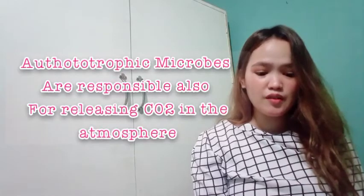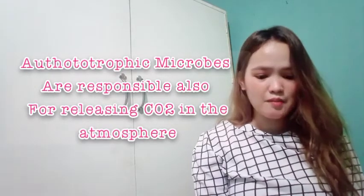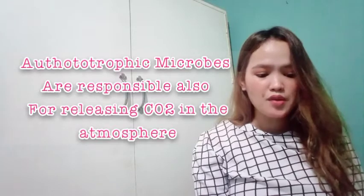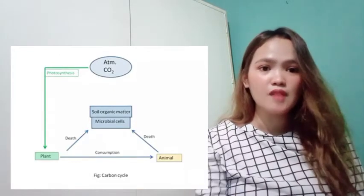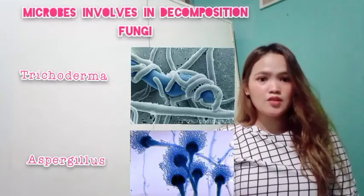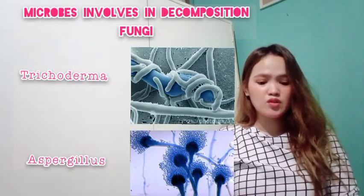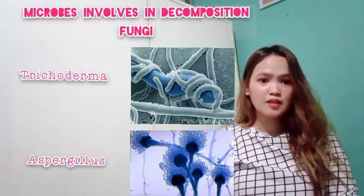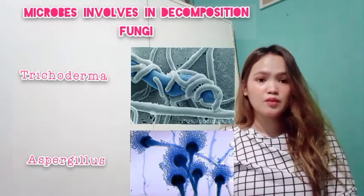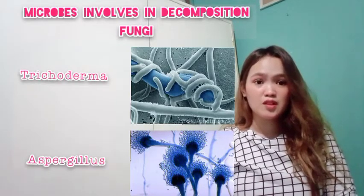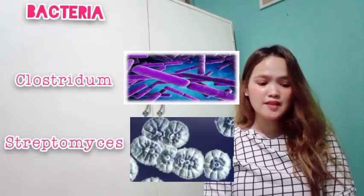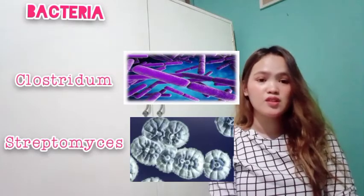Respiration occurs in plants, animals, and microbes. Autotrophic microbes are also responsible for releasing carbon dioxide into the atmosphere — that is the nutshell of the carbon cycle. Microbes involved in decomposition include fungi and bacteria. Examples of fungi include Trichoderma, Aspergillus, Penicillium, Fusarium, and Chaetomium. Examples of bacteria include Clostridium, Streptomyces, Bacillus, Pseudomonas, and Nocardia, among others.